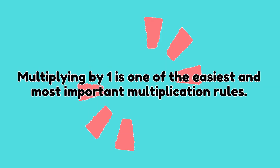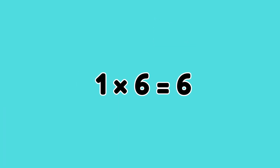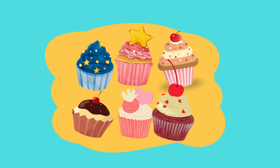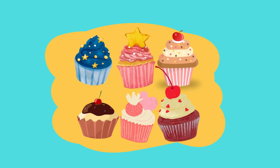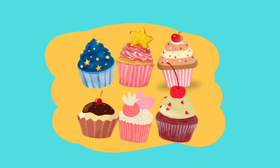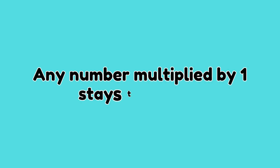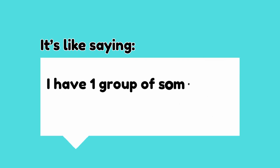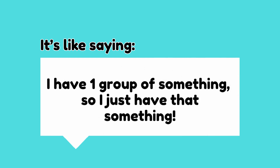Multiplying by one is one of the easiest and most important multiplication rules. Any number multiplied by one stays the same. It's like saying: I have one group of something, so I just have that something.